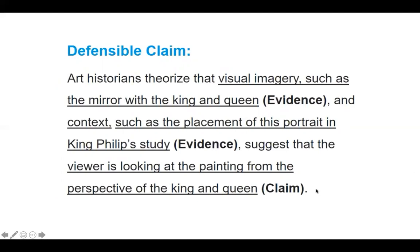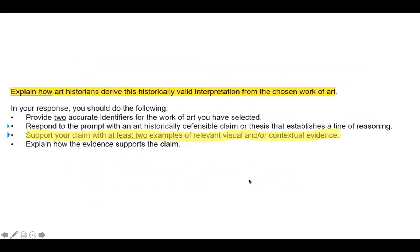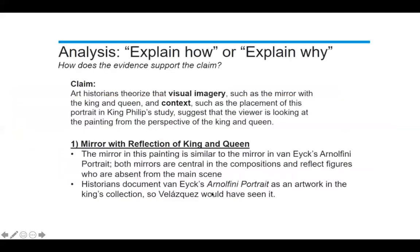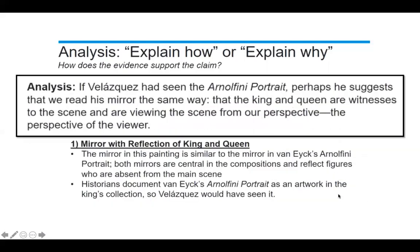The claim is: the viewer is looking at the painting from the perspective of the king and the queen. But your argumentation essay asks for more — you have to support your claim with at least two examples of relevant visual or contextual evidence and explain how the evidence supports the claim. More details you can include about the mirror: the mirror in this painting is similar to the mirror in Van Eyck's Arnolfini portrait. Both mirrors are central in the composition and reflect figures who are absent from the main scene. Historians document Van Eyck's Arnolfini portrait as an artwork in the king's collection, so Velázquez would have seen it. If Velázquez had seen the Arnolfini portrait, perhaps he suggests that we read his mirror the same way — that the king and queen are witnesses to the scene, viewing it from our perspective.